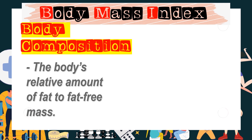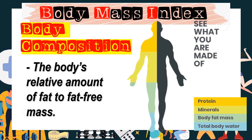Body composition is the body's relative amount of fat to fat-free mass. It is also a method of breaking down the body into its core components. We are made of four components: protein, minerals, body fat mass, and body water. Overall, it describes your weight more accurately and provides a better glimpse into your overall health than traditional methods.